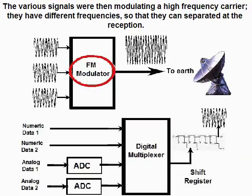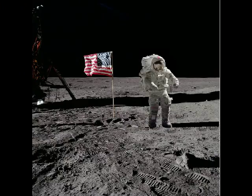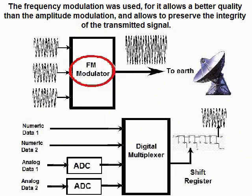The various signals were then modulating a high-frequency carrier. They have different frequencies so that they can be separated at the reception. Frequency modulation was used, for it allows better quality than amplitude modulation and allows preserving the integrity of the transmitted signal.